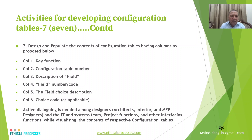The seventh step is designing a configuration format and populating it. This can be a simple table having columns like key functions, table number, field name, field code, field choice, and choice code — examples of which can be found in the book. Active dialogue is required between the architects, interior, and MEP designers and the IT and system team who will populate these tables based on designer inputs. Dialogue is also needed with project functions and other interfacing functions, because there are interfacing business requirements and the contents of these configuration tables need to be actively identified.